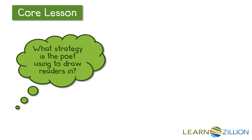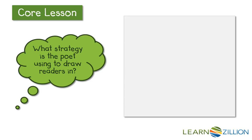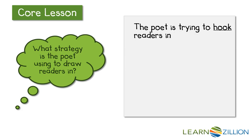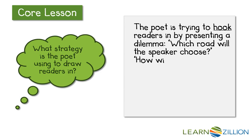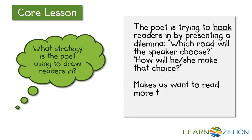Now that we have read and thought about stanza one, we need to ask ourselves: what strategy is the poet using to draw readers in? As I read, I automatically started to relate to the speaker and to his or her dilemma. I was thinking to myself, which road is the speaker going to choose? This is how the poet is trying to draw me in, by presenting a conflict that the speaker faces. As the reader, I am hooked in and want to know which road the speaker is going to travel on, and which one he or she is not going to take. I will write a note about the hook next to stanza one. The poet is trying to hook readers in by presenting a dilemma. Which road will the speaker choose? How will he or she make that choice? I want to continue reading now that I have been drawn into the speaker's dilemma. That's how I know I found this poet's hook.